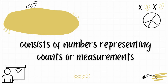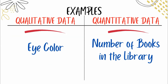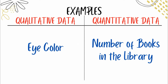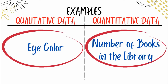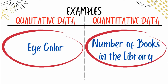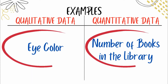To understand better, let's look at examples. An example of qualitative data is eye color — we don't have an eye color of '7' or '3.14.' Eye color may be black, bluish, grayish, brownish, and so on. It's more of a characteristic or quality. While quantitative data involves numbers, like the number of books in the library — that's a definite number.